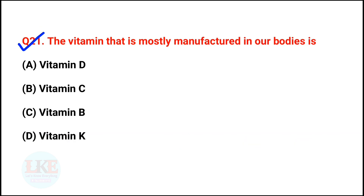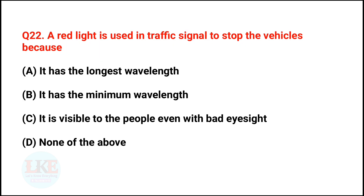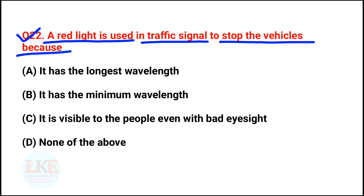Question number 21: which vitamin is mostly manufactured in our bodies? Vitamin D can be easily synthesized in the human body. Question number 22: red light is used in traffic signals to stop vehicles because it has the longest wavelength.